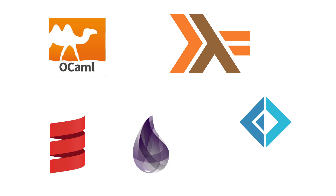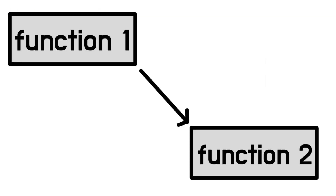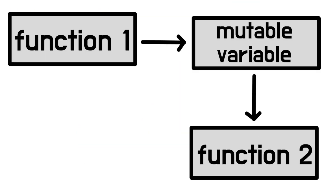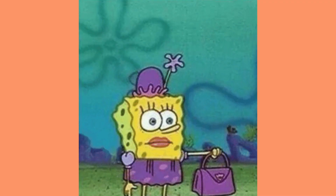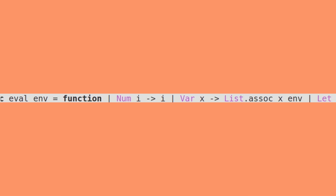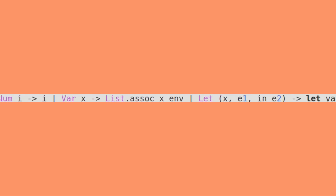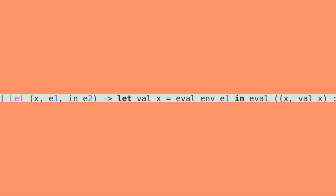Functional programming as a style has you passing data directly between functions rather than accumulating state within variables. You can usually write really complex math operations all on one line with functional programming, which looks nice but it's a pain when your error is on a line that's 300 characters long.